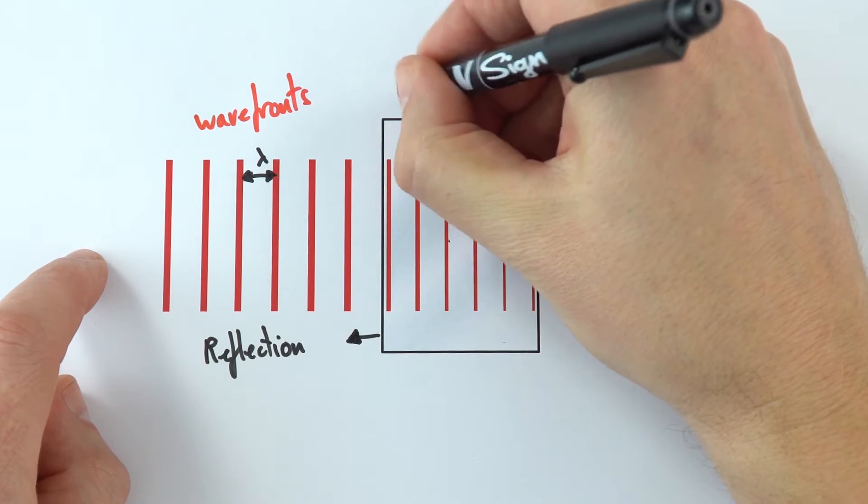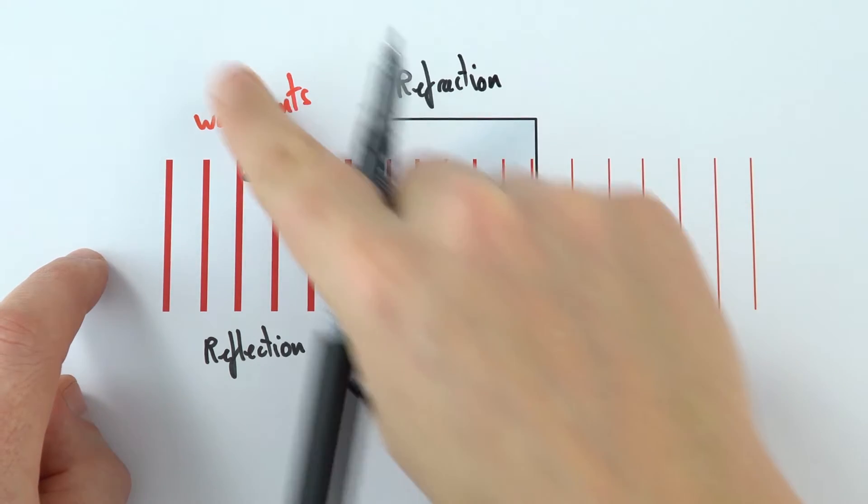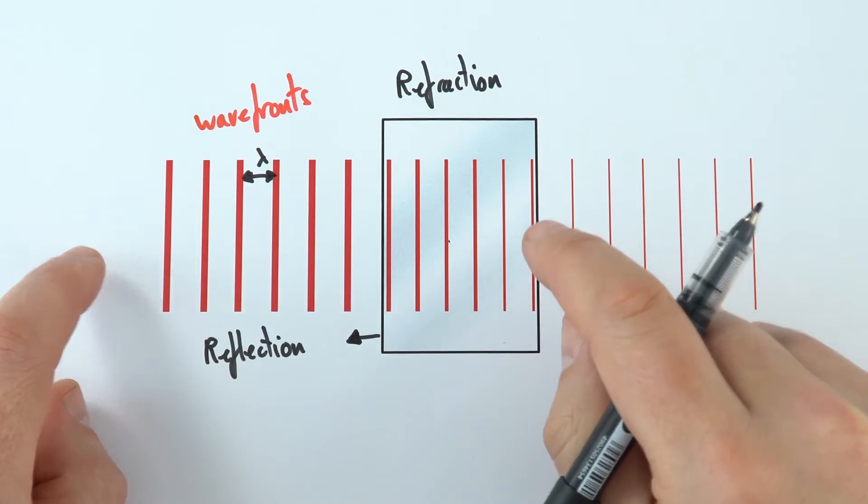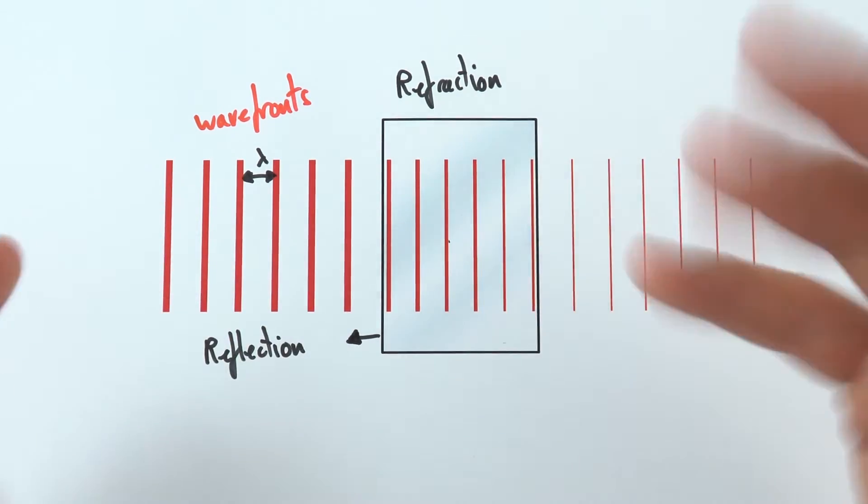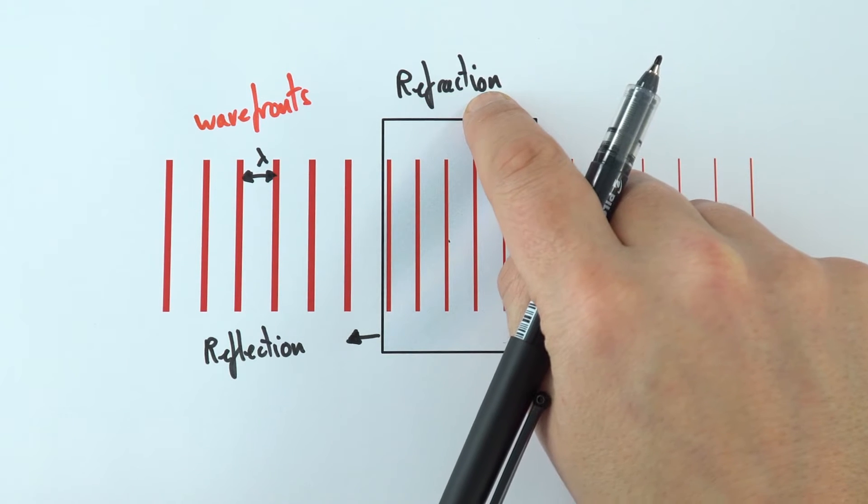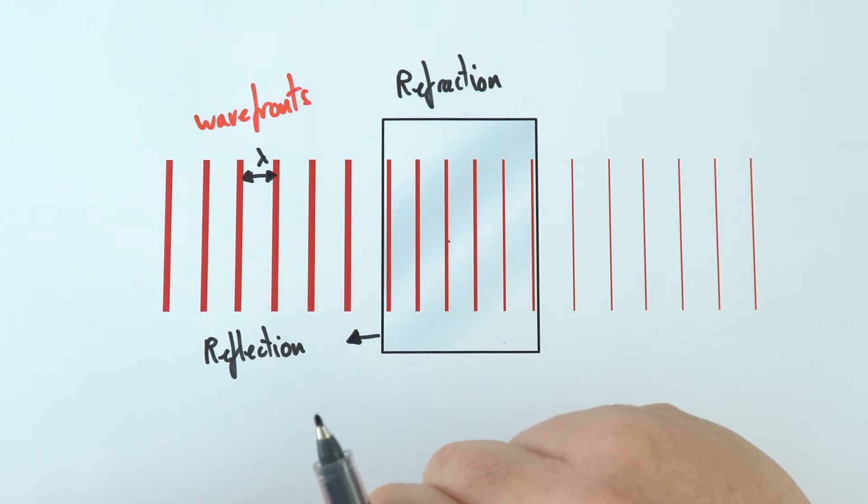And what we then get is something called refraction. And often if you've got a wave which is hitting material at an angle, we also then have a change in direction. We can actually change the direction of waves. And that's really useful. So refraction is when a wave speeds up or slows down as it goes from one medium to another.